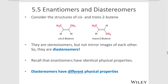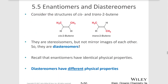Here are some examples. A diastereomer can be related to a double bond. Here we have cis-2-butene and trans-2-butene. These are not mirror images of each other; they are stereoisomers, so they are a type of diastereomer.